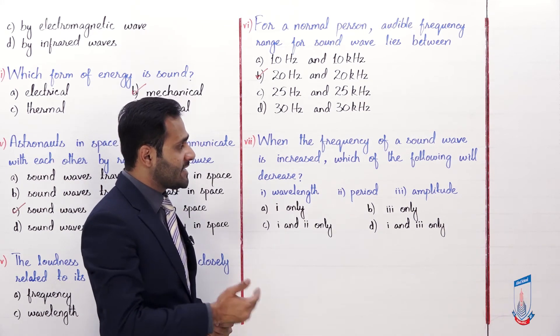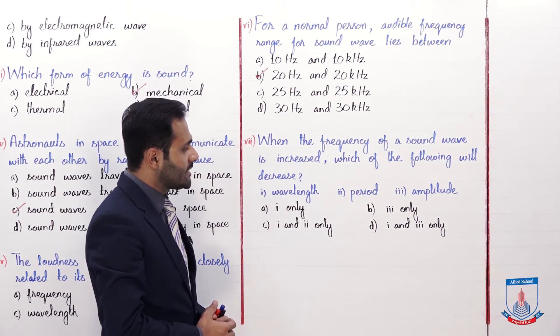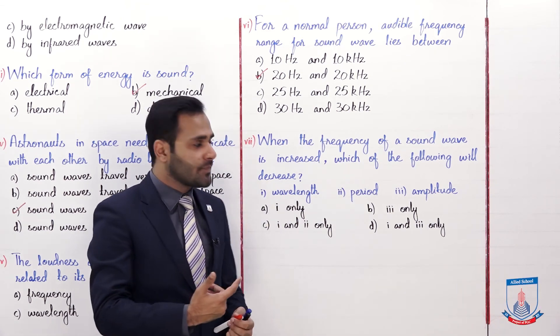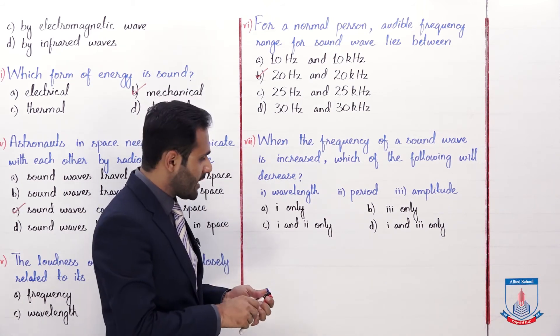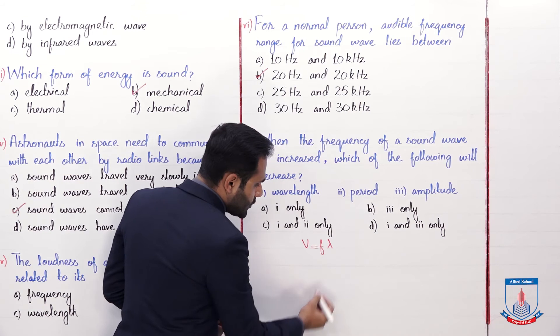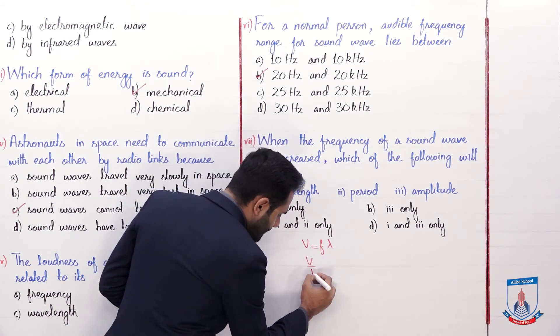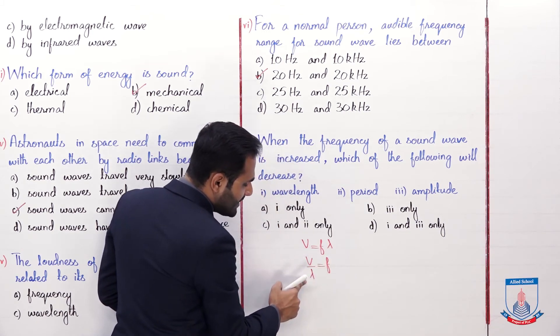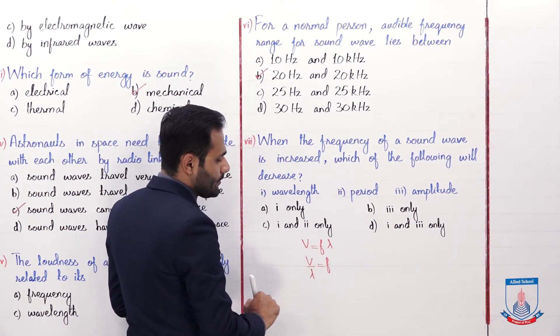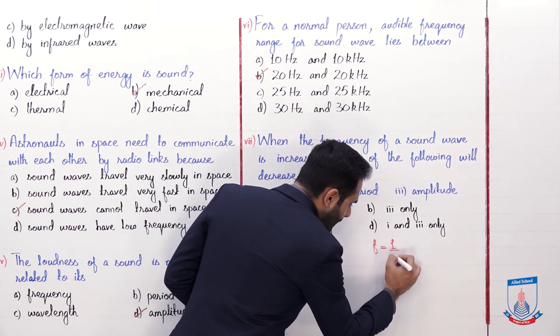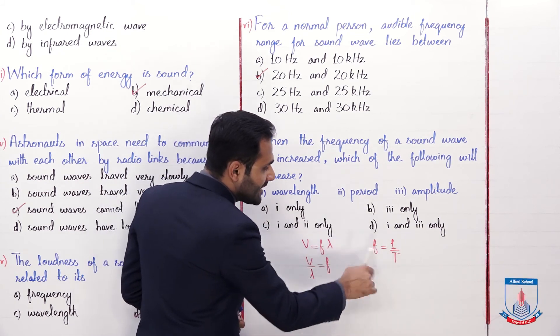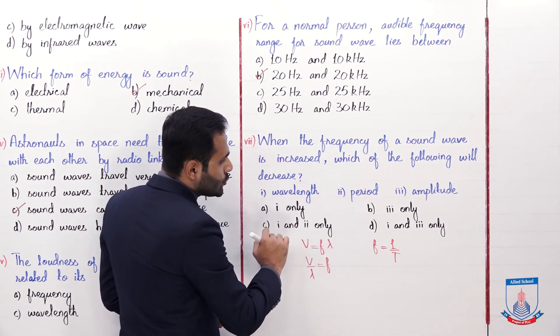And the last MCQ, when the frequency of a sound wave is increased which of the following will decrease? The first is wavelength, second is period and third is amplitude. So if we increase the frequency of any sound wave then wavelength will decrease. How? According to the formula we know that v is equals to f lambda. So lambda is multiplied here, if it comes to this side it will divide. So here frequency is inversely related with wavelength. That means if we increase frequency then wavelength will decrease. Similarly frequency is equals to one by time period. That means frequency and time period are inversely related. Frequency increases then time period decreases.